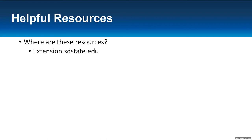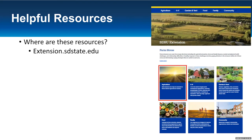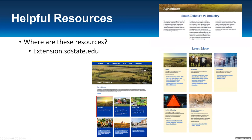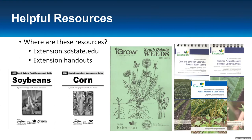Here's a snapshot of the SDSU Extension website — just click on Agriculture and it'll bring you to our agricultural page, where you can find crops, cover crops, other topics, livestock, agribusiness, safety and training, and natural resource conservation. We also have extension handouts and pest management guides — your last resort suppression resources, pesticides. There's a weed ID book, Palmer amaranth resources, and our soybean and corn caterpillar pest guide, among other handouts.